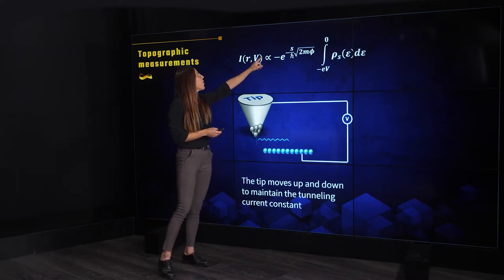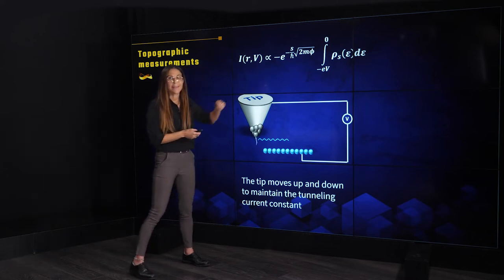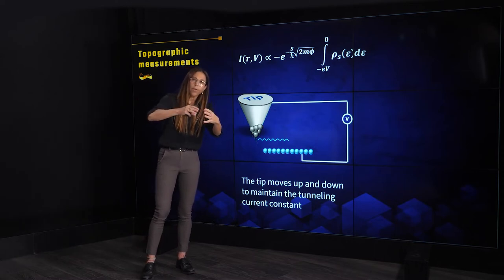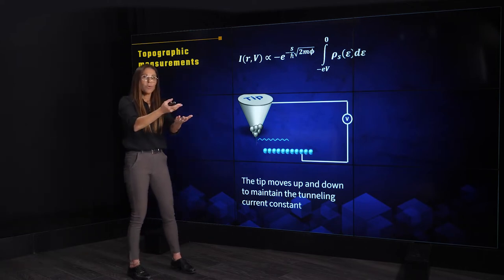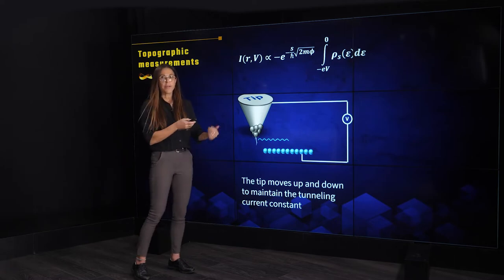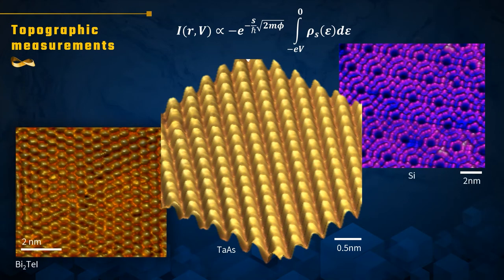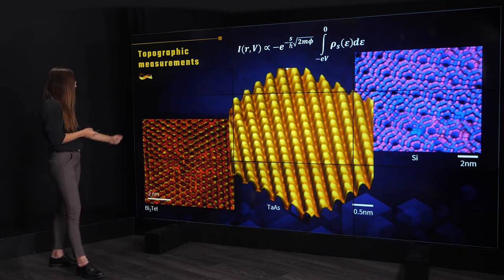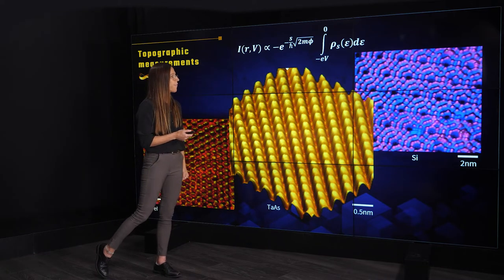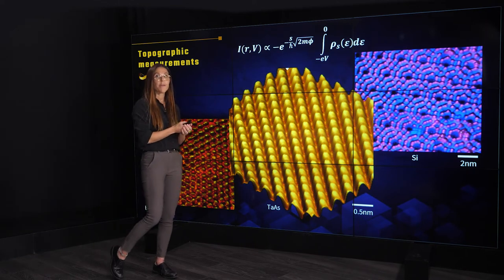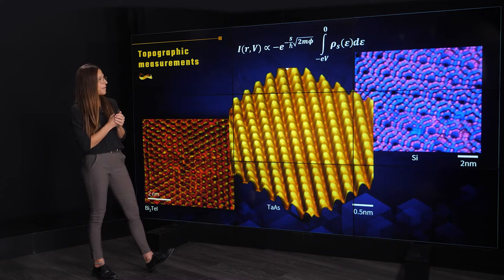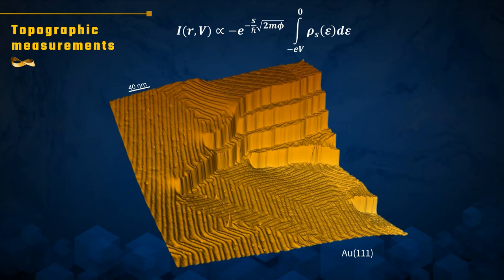It is not exactly defined what we mean when we say we measure the height of the sample, since the tunneling current depends both on the distance between tip and sample and on the tunneling density of states. What we actually measure is a contour of constant charge density related to the topography of the material, imaging it at atomic resolution. Here we see examples: the tantalum arsenide surface at atomic resolution, bismuth telluride iodine — a dual topological insulator with a different crystal structure — the surface of silicon with its 7×7 reconstruction first observed by STM, and the surface of gold(111) showing atomic step edges and the herringbone reconstruction.